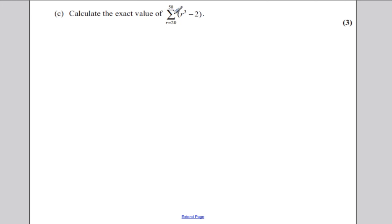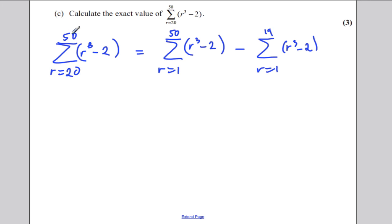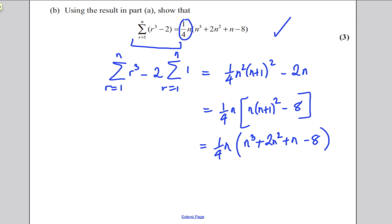Now, part C says calculate the exact value of this. Well, what you're supposed to do here is you're supposed to break this sum from 20 to 50 of R cubed subtract 2. You're supposed to break that up into the sum from R equals 1 to 50 of R cubed subtract 2, subtract the sum from 1 to 19 of R cubed subtract 2. Because the sum from 20 to 50 is the sum from 1 to 50 take away the sum from 1 to 19. And we can just use what we did in part B.